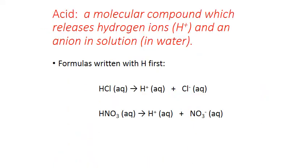Acids are molecular compounds, made up of only non-metals covalently bonded together. But they have the unique property that when dissolved in water, they break apart, releasing hydrogen ions and an anion. So they're molecular compounds, but when in water, they actually release ions like an ionic compound would. The convention for acid formulas is that the hydrogen that breaks off is always written first, and whatever follows is the anion also released in water.